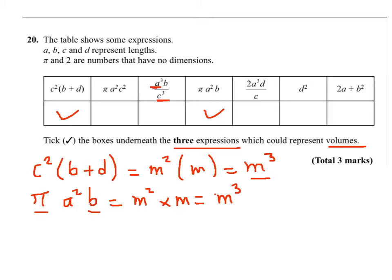And if I look at the fifth expression which is 2a to the power 3d over c, so 2 is a number, a to the power 3 is cubic meter, d is a meter length, and c is meter length. And I'll simplify, I'll end up with having a volume. A volume times by a number is always a volume, so that is an expression for the volume.